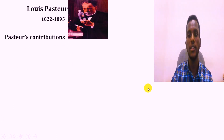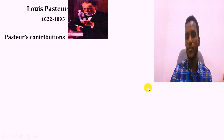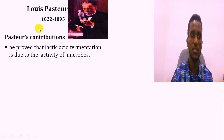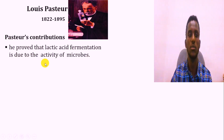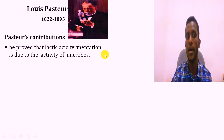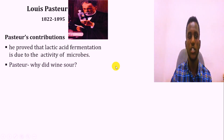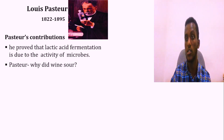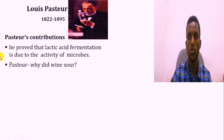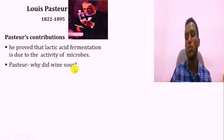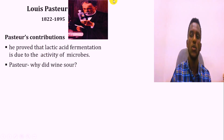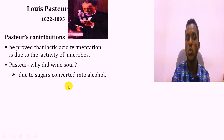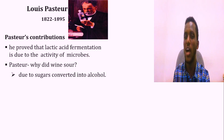Louis Pasteur not only disproved spontaneous generation but also made many other contributions. He showed the role of microorganisms in lactic acid production and fermentation in the wine industry. He explained why wine becomes sour: microorganisms such as yeast convert sugar or substrate into alcohol. When alcohol converts further, a sour taste develops.